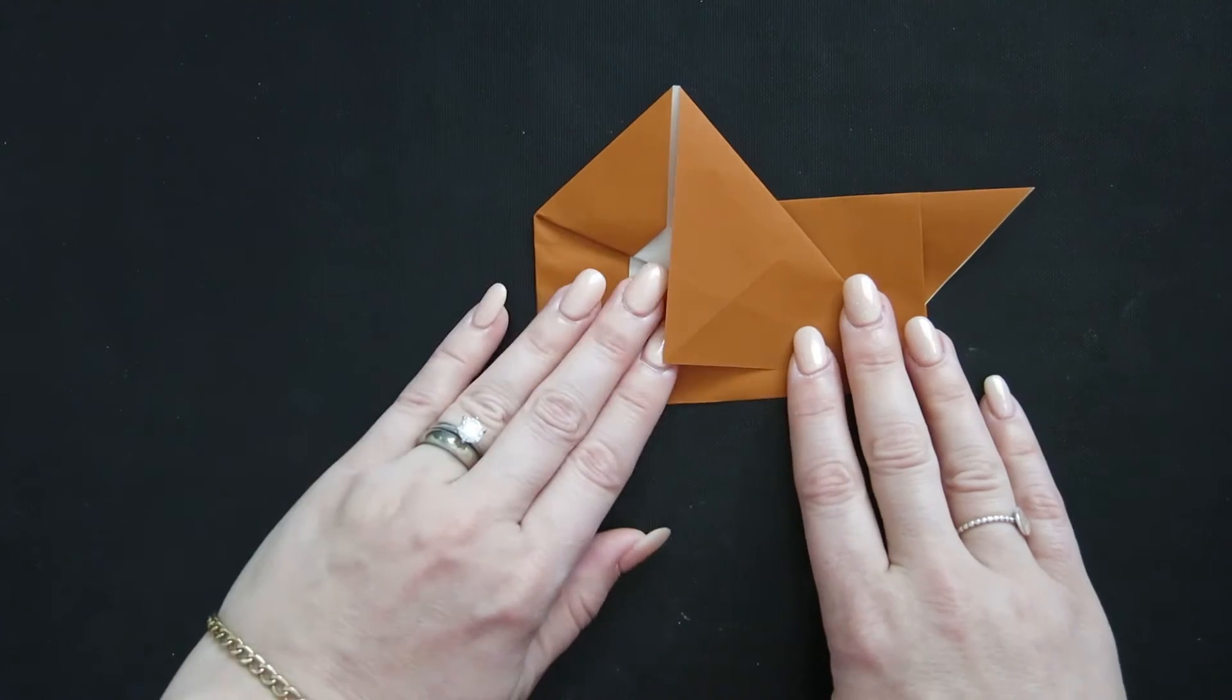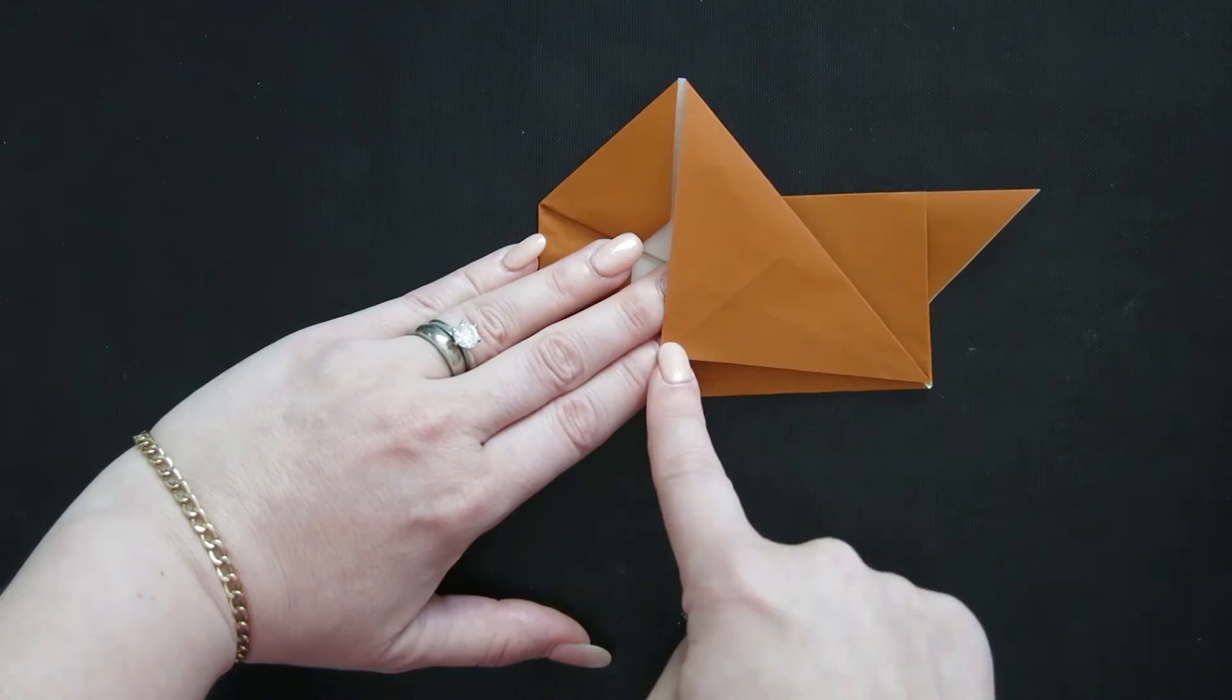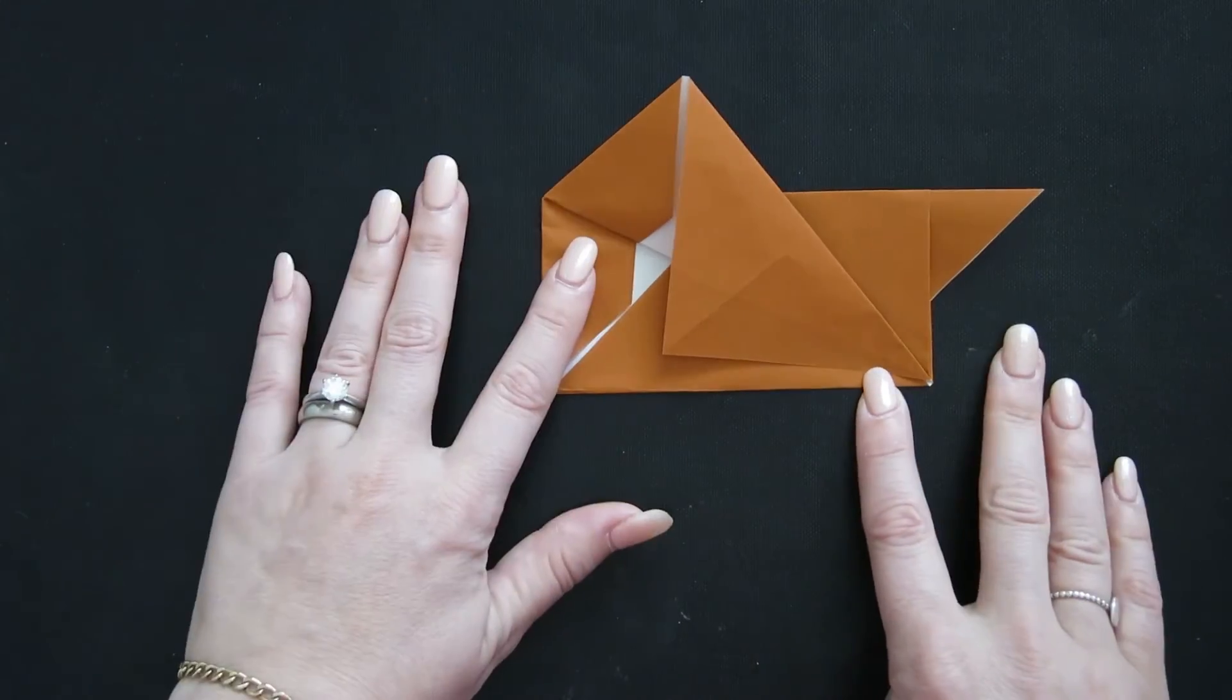Okay and you can sort of see him starting. There's his nose and this is his long ears and fur. There you go. And crease.